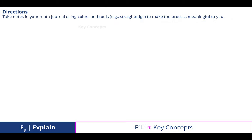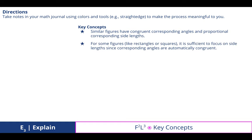So, taking notes in your math journal, using colors and tools to make the process meaningful for you, write these key concepts. Similar figures have congruent corresponding angles and proportional corresponding side lengths. For some figures, like rectangles or squares, it is sufficient to focus on side lengths since those corresponding angles are automatically congruent. Remember that squares and rectangles will always have 90 degrees.